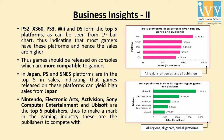Coming to the platforms, the top five platforms in sales indicate that most video gamers possess these platforms, and hence the sales are high. Thus, games must be released on consoles or platforms which are more compatible to gamers. The top five publishers denote that to make a mark in the gaming industry, they are the publishers to compete with.